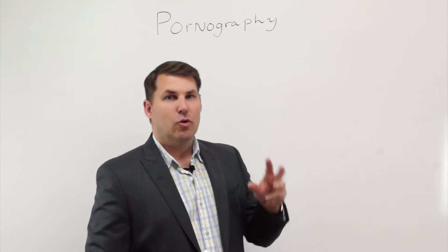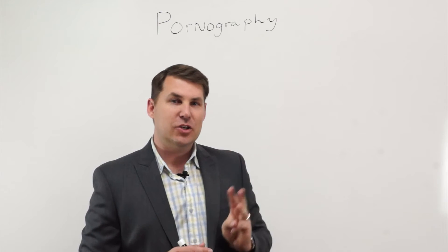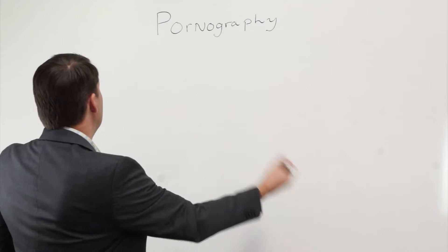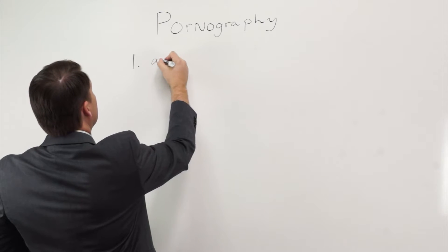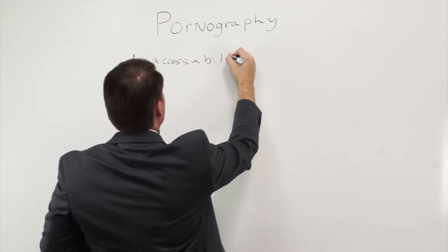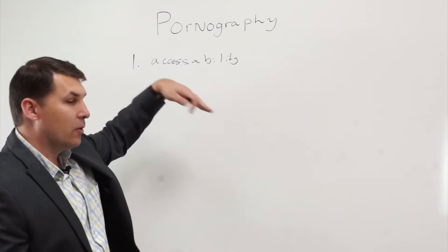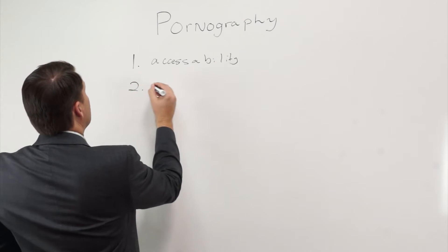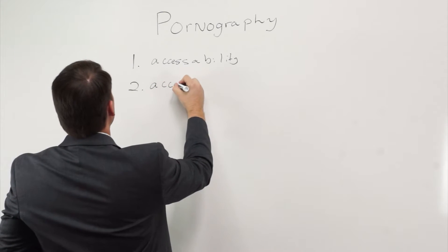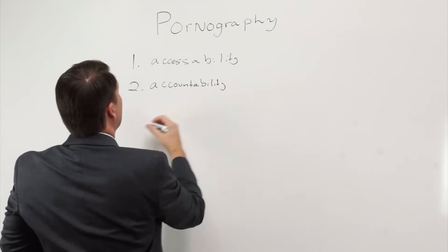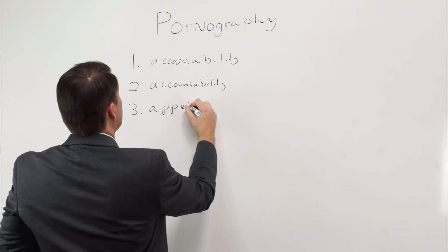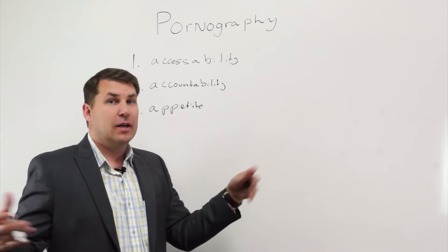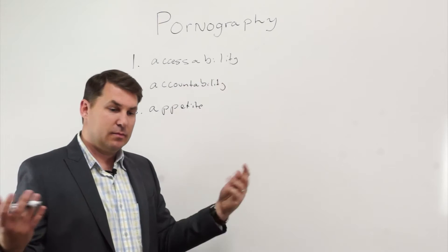There are three things that will really lead you into the path of pornography. If these three things are there, you are going to participate in pornography. The first is accessibility. The second is accountability. And the third is your appetite. If you have an appetite for pornography, you have access to it, and there's no accountability—no one around to make you feel ashamed or stop you—you will indulge in pornography.